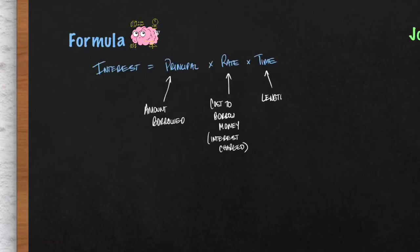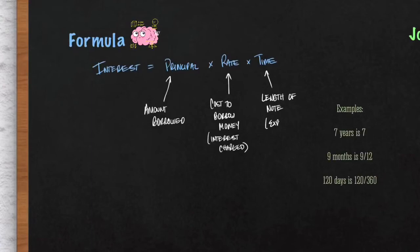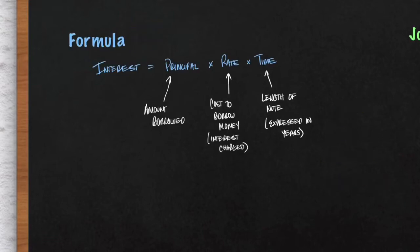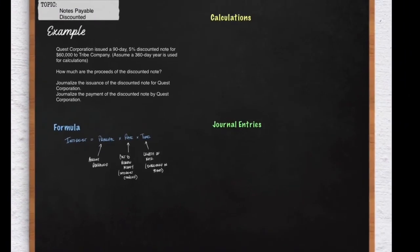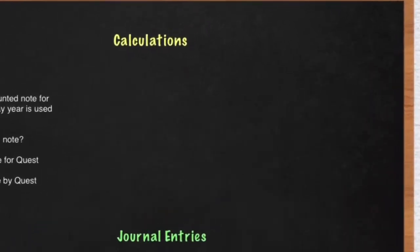Next we have the time, which is the length of the note or the loan. The time is always expressed in years, so always make sure to read problems carefully. In this case, it's given to you in days, so you'll have to create a fraction. You'll see what we mean as we go through the calculations.